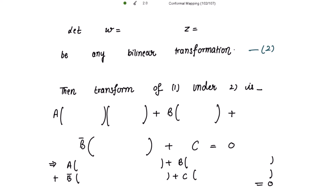Let the bilinear transformation be w = (az + b)/(cz + d). Taking the denominator to the other side, collecting terms of z and factoring, we get z in terms of w as z = (-dw + b)/(cw + a). Mark this as equation 2.